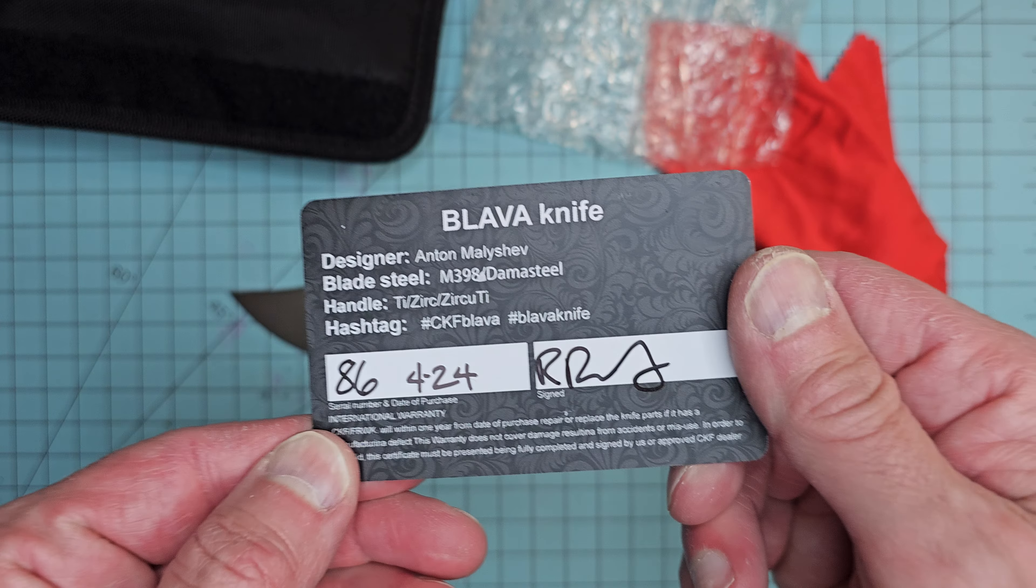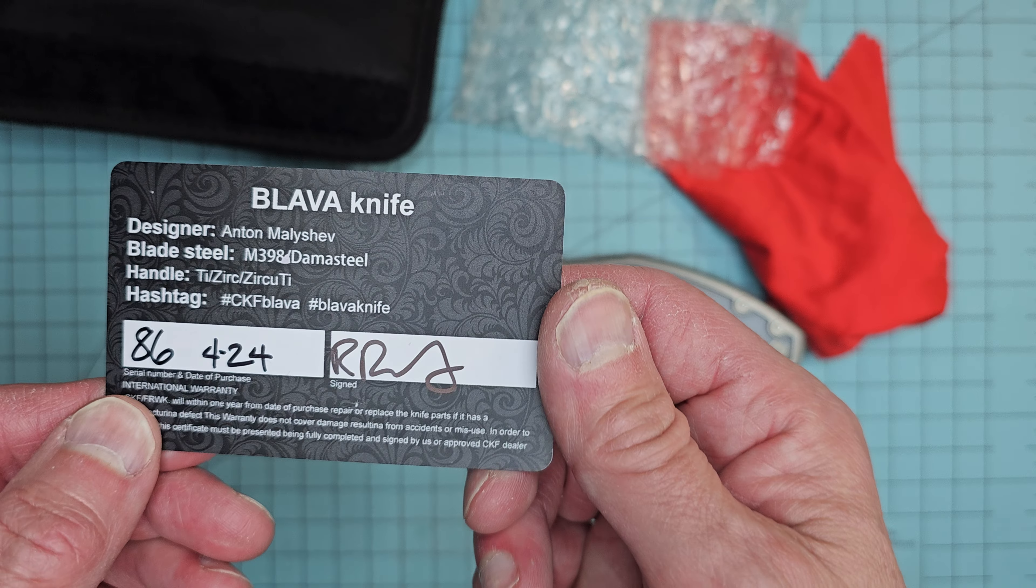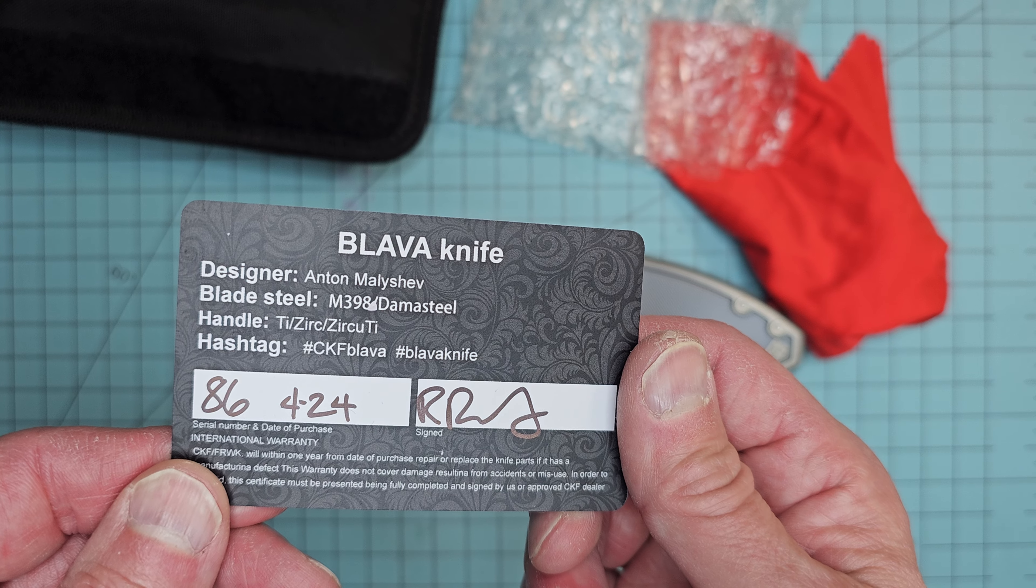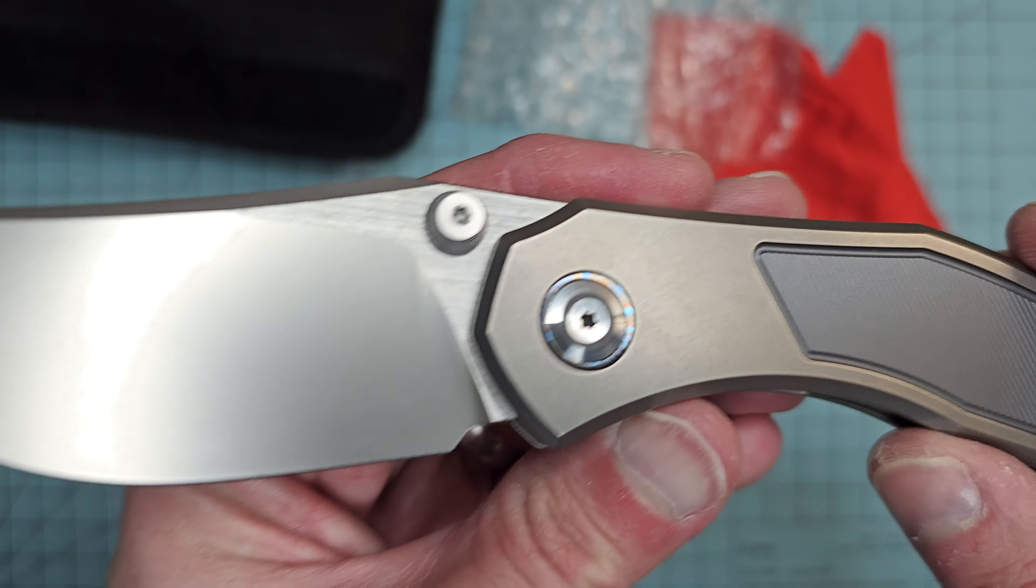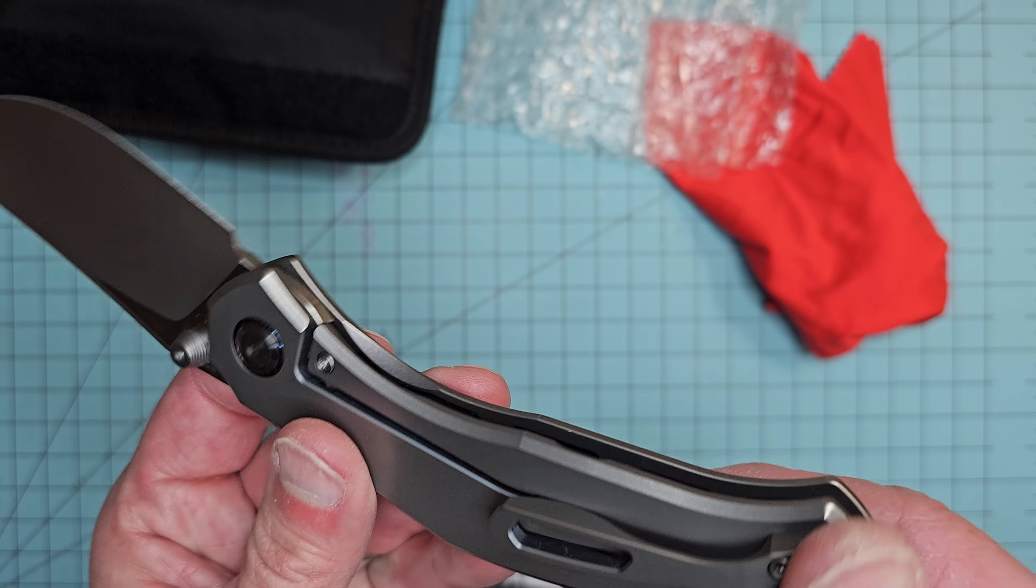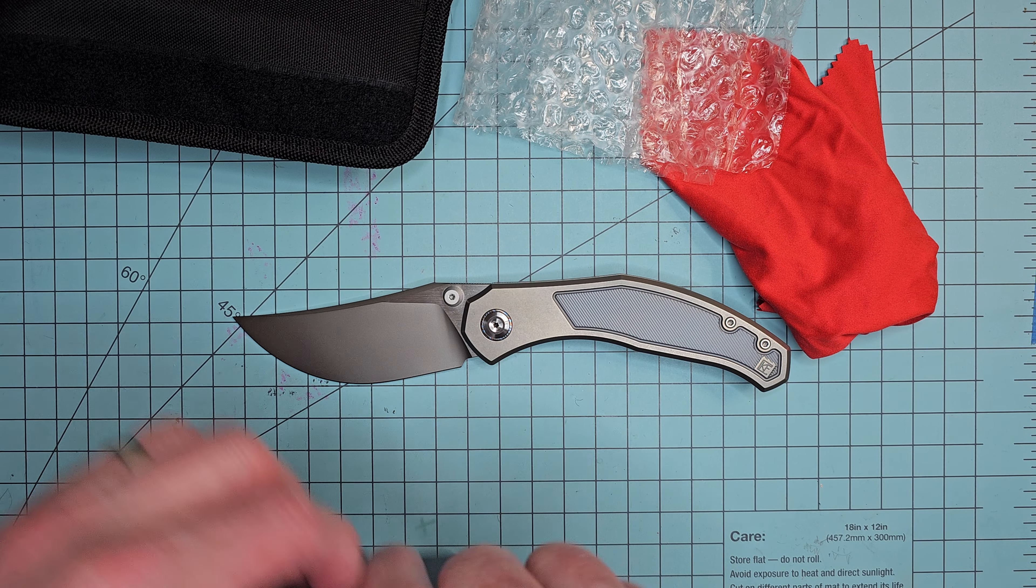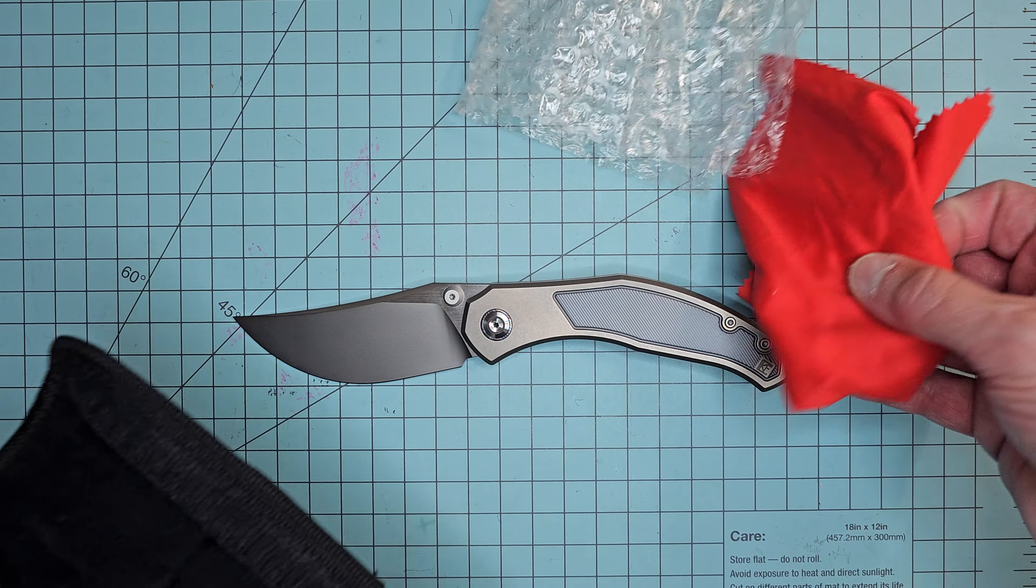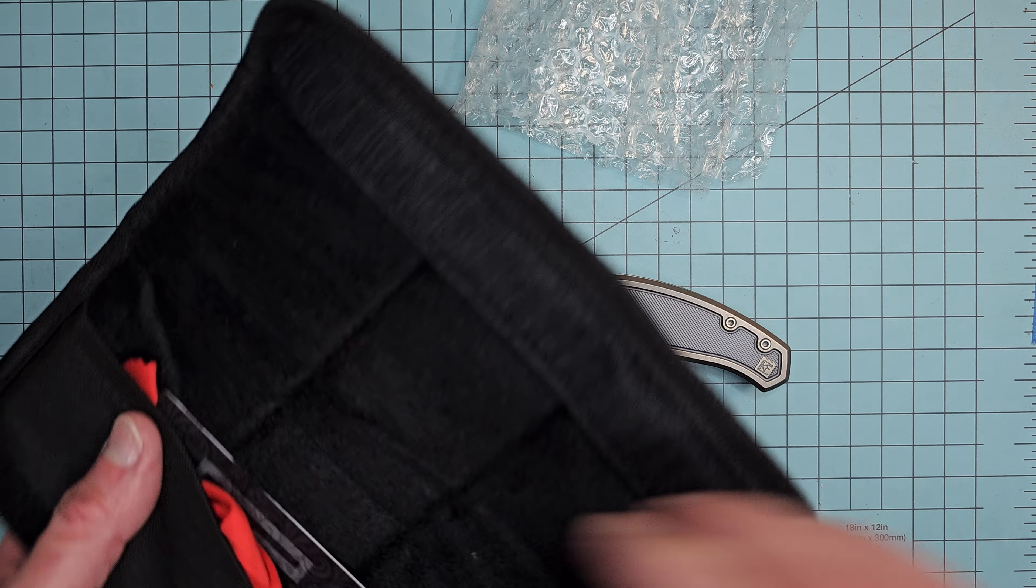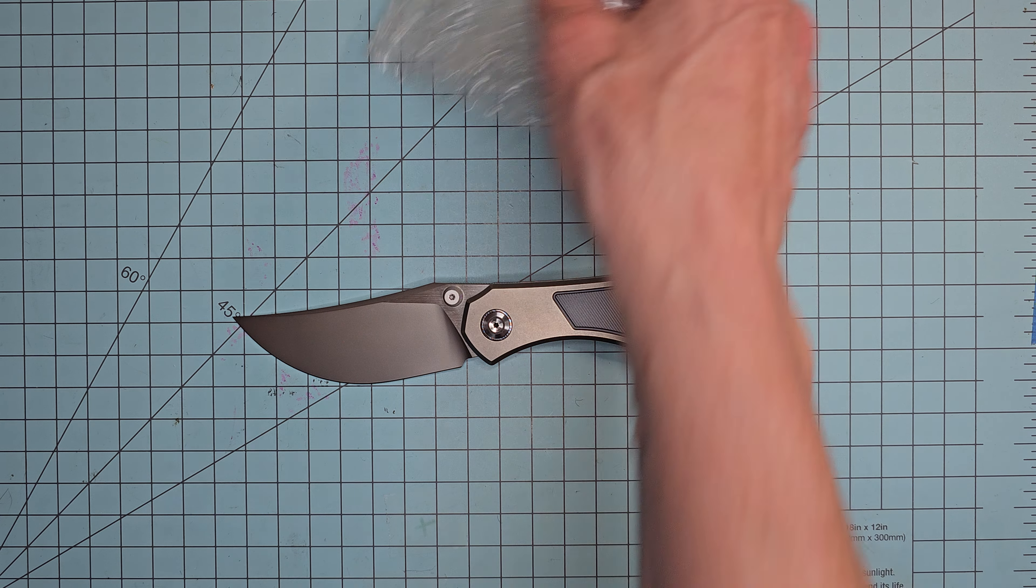And then of course you get your card right there. This one was completed on April 20 of 2024. It's number 86. CKF Blava knife. DI, Zerk, Zerkutai. Where's the Zerk? Is it the pivot? Not sure. In any case, that's what that is right there. So comes a little microfiber cloth, but no chocolate anymore. You used to get a special little Russian chocolate, but that isn't there anymore.